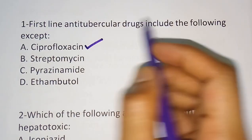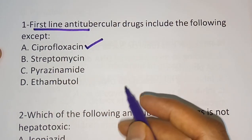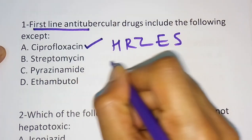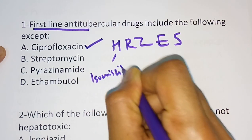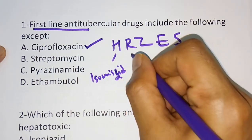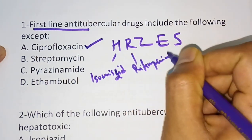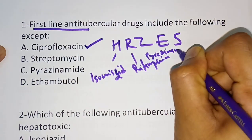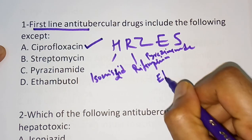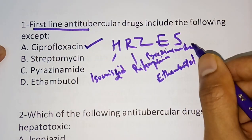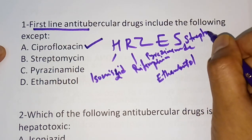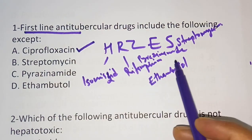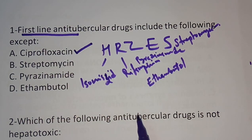The first-line anti-TB drugs are H, R, Z, E, S — where H represents isoniazid, R represents rifampicin, Z represents pyrazinamide, E represents ethambutol, and S represents streptomycin. These are the first-line anti-TB drugs. Ciprofloxacin does not appear in this list, so ciprofloxacin is not a first-line anti-TB drug.